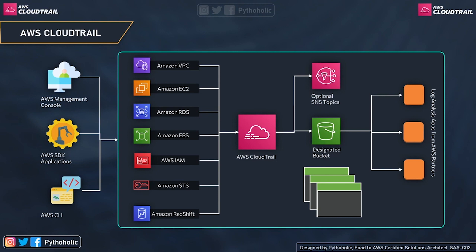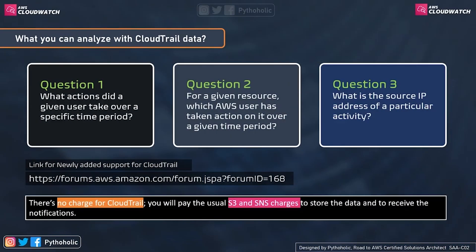Some of the services that CloudTrail logs APIs for include EC2, VPC, EBS, RDS, IAM, STS (Security Token Service), Redshift, and CloudTrail itself, with additional services recently added — check the documentation for the full list. Once log files are stored in S3, you can use AWS Athena to query them and take action, create CloudWatch alarms, or use third-party analytics applications from AWS partners.